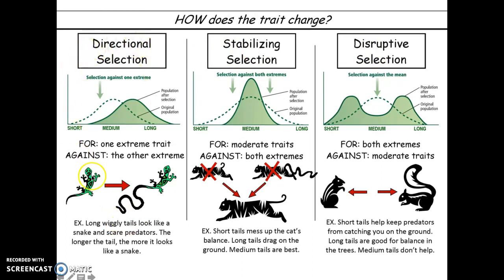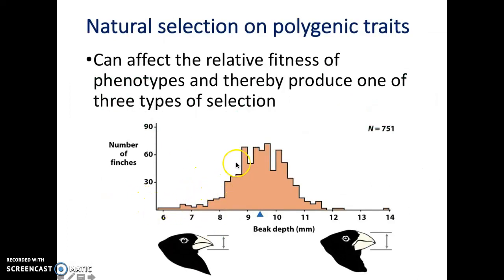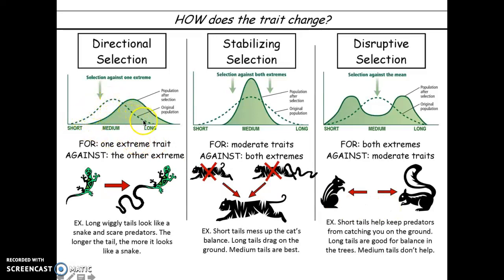The first one is directional selection — the word 'directional' tells you it goes in a certain direction. The dotted curve is the distribution of the initial population, which looks like a bell curve. For this lizard example, we have short-tail lizards, medium-tail lizards, and lizards with really long tails. The population has the most of the medium-tail lizards. The Y-axis represents number or percentage, and the medium-length tail is predominant within this population.